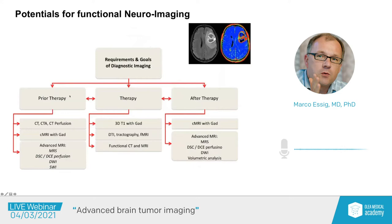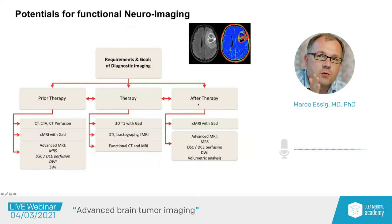We use all these tools in three scenarios. For example, we use advanced MRI like MR spectroscopy and perfusion imaging in the pre-therapeutic workup for better diagnosis, differential diagnosis, and grading. We use diffusion tensor imaging, tractography, and functional MRI or CT for treatment planning and management. We also use these tools for follow-up to differentiate between tumor-related changes and treatment-related changes.